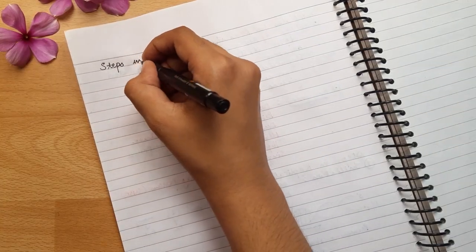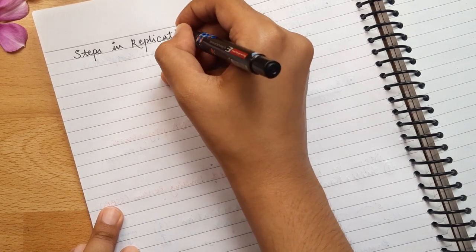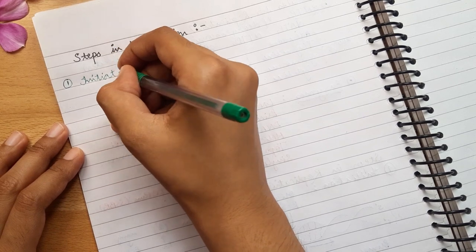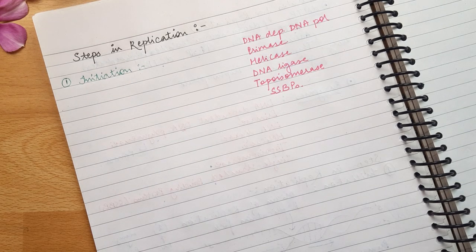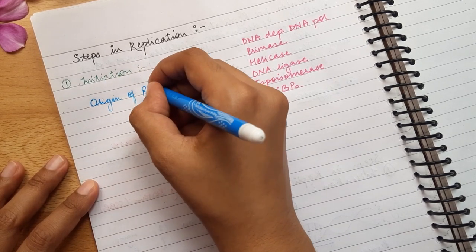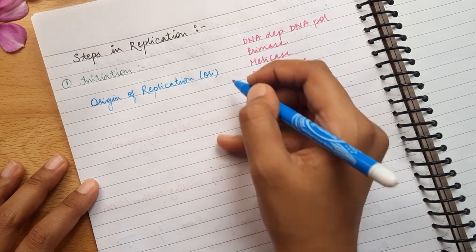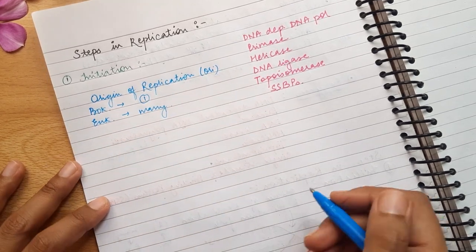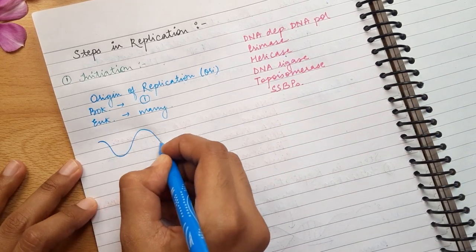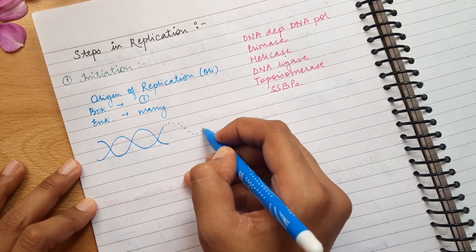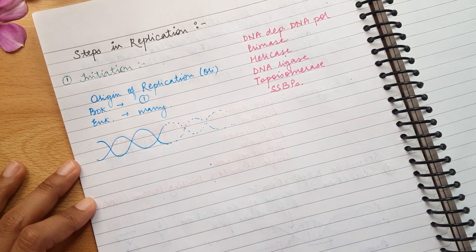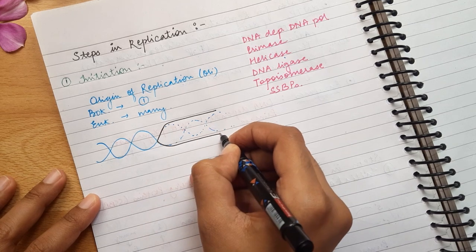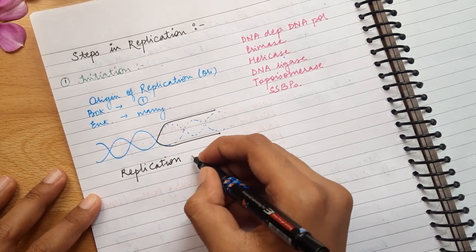Now let's talk about the steps involved in replication. So there are basically three steps in replication. The first one is initiation step. There is a definite region known as origin of replication where replication begins. Now prokaryotes such as E. coli have single origin of replication, but eukaryotes have multiple origin of replications in order to replicate such huge genomes. Now this origin of replication is identified and then an enzyme known as helicase binds to it. Now I'm drawing here a segment of DNA. Now suppose the helicase enzyme binds to it, then the dotted portion will open up and form a replication fork.